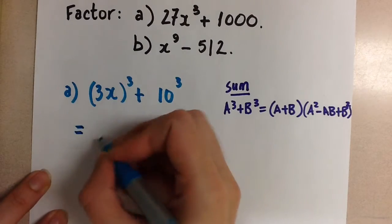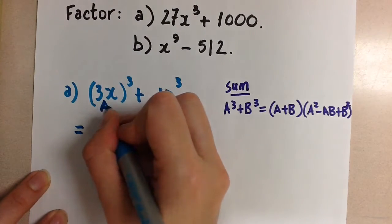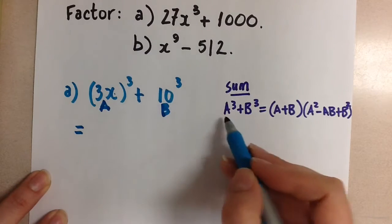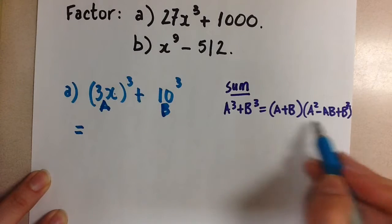So we're going to use that formula here. If we treat this as the a, and this is the b, so the 3x is a, and 10 is b, now we'll sub that into this part of the formula here.